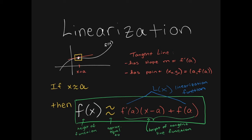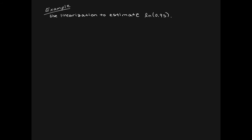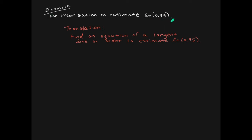The whole point of linearization is that the height of the function itself, which is the white graph here, is approximately the same as the height of the tangent line, as long as your x values are very close to a, or very close to the point of contact. Let's do an example.